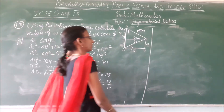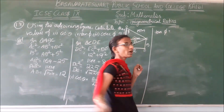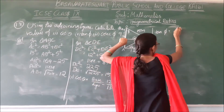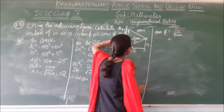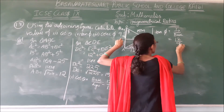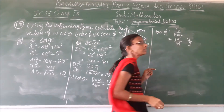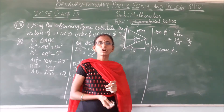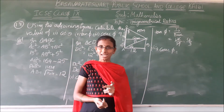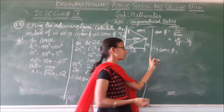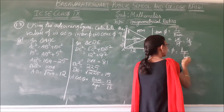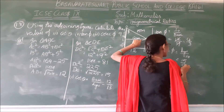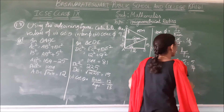Next, second one is tan phi. Tan means perpendicular by base. Perpendicular is EC and base is DE. So tan phi equals 12 by 9, which simplifies to 4 by 3. Next is cosec phi. Cosec means hypotenuse by perpendicular — it is the inverse of sine. Hypotenuse is DC which is 15, and perpendicular is EC which is 12. So cosec phi equals 15 by 12, which is 5 by 4.